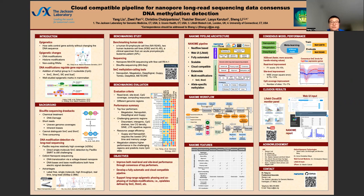A lot of technologies have been developed to quantify DNA methylation, and bisulfite sequencing is the gold standard technology for DNA methylation. In bisulfite sequencing, the chemical conversion will only convert unmethylated C to T, leaving methylated C as it is. Bisulfite sequencing is the most widely available and standardized technology for qualitative and quantitative detection of 5mC.